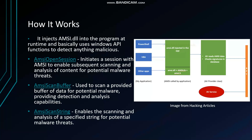AmsiScanBuffer is the second key function. Its main purpose is to scan a buffer of data — such as an in-memory buffer — for anything malicious or suspicious that is being provided to any program. For example, if I start a PowerShell session and write anything suspicious, it will detect it automatically. Let me show you.